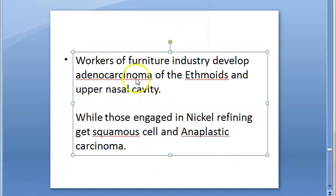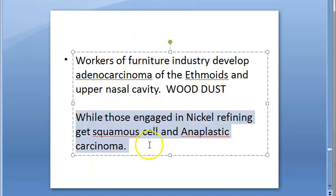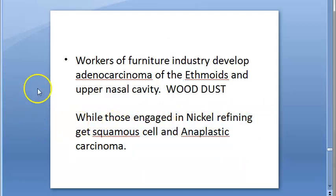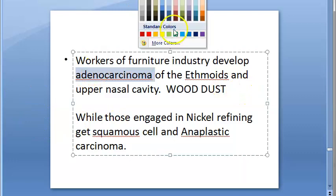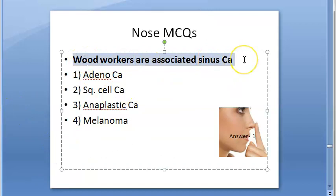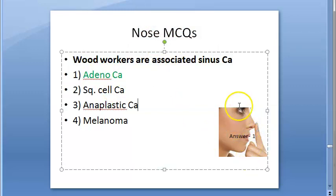The textbook states that whoever is exposed to wood dust is prone to adenocarcinoma of the ethmoid sinus. Additional information: nickel refining is associated with squamous cell and anaplastic carcinoma. Wood workers are associated with adenocarcinoma of the sinus — this is the correct answer.